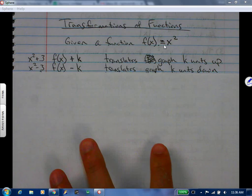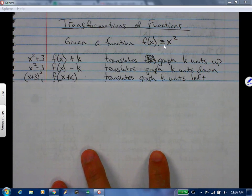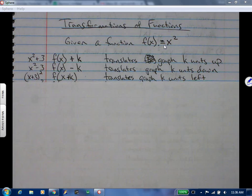So if we go inside, this is what it would look like: f of x plus k. So this would be inside the function. The example would be x plus 3 where the whole thing is squared, if the 3 is now inside the parenthesis. The insides are always backwards. So if it's x plus k, that's going to translate the graph not to the right but to the left, so it's a plus k.